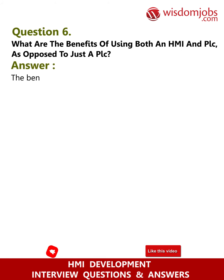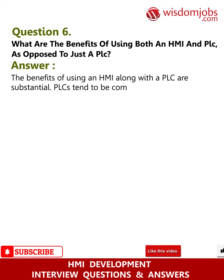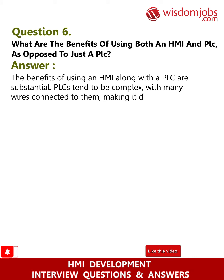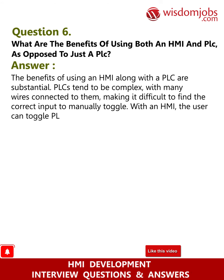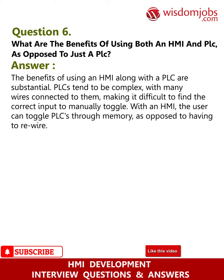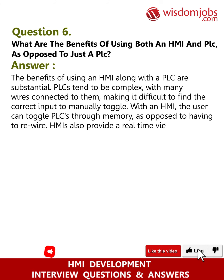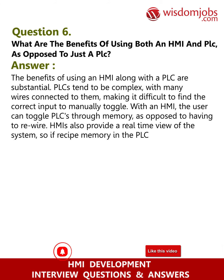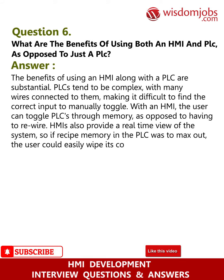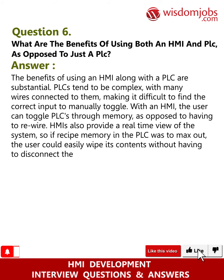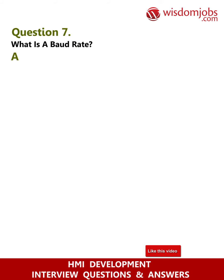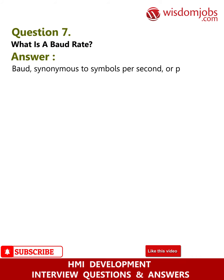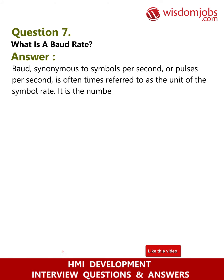Question six: What are the benefits of using both an HMI and PLC as opposed to just a PLC? Answer: The benefits of using an HMI along with a PLC are substantial. PLCs tend to be complex with many wires connected to them, making it difficult to find the correct input to manually toggle. With an HMI, the user can toggle PLCs through memory as opposed to having to rewire. HMIs also provide a real-time view of the system, so if recipe memory in the PLC were to max out, the user could easily wipe its contents without having to disconnect the PLC.